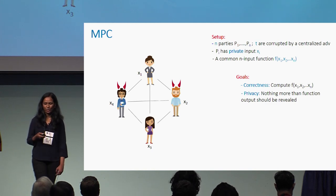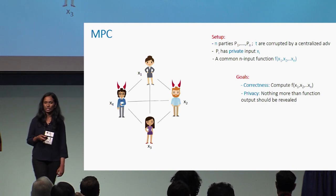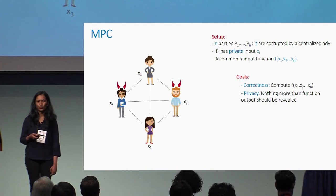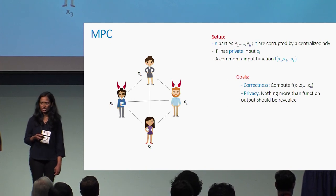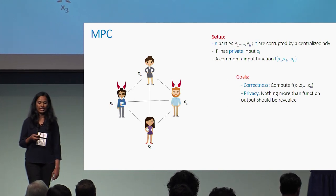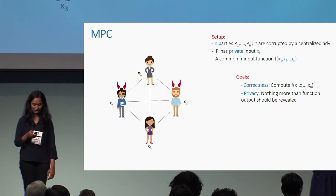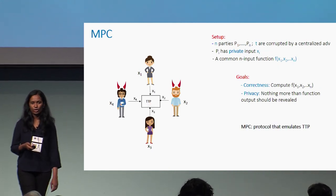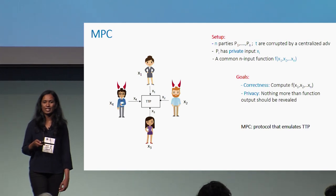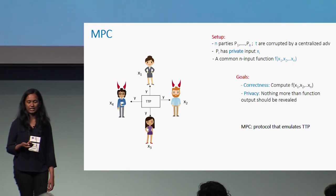Let us quickly recap what the problem of multi-party computation (MPC) is. We have N mutually distrusting parties, out of which T may be corrupt, and the goal is that they want to compute some combined function of their private inputs. MPC gives them a means to do so with the guarantee that nothing beyond the output of the function will be revealed. In a nutshell, MPC emulates the effect of having a trusted third party to whom all parties can simply submit their inputs and get the output in return.